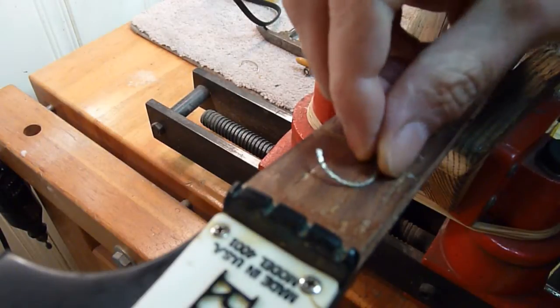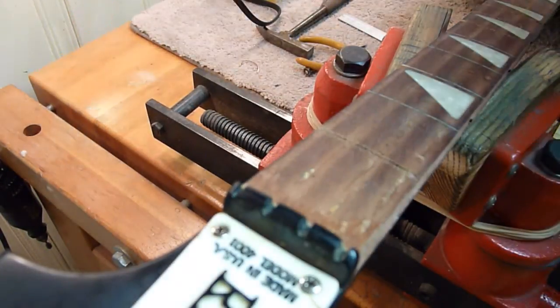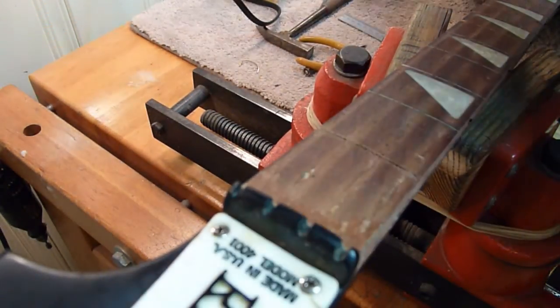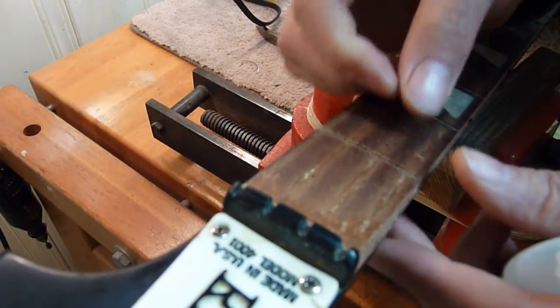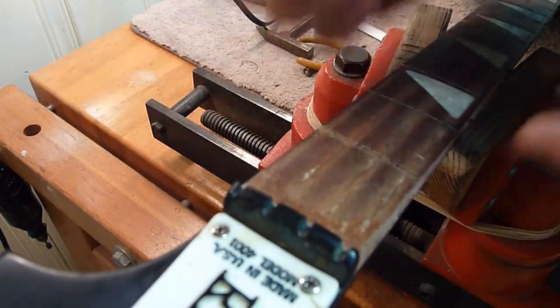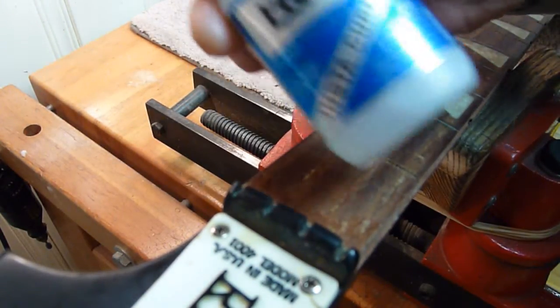There's the old tang. That fret didn't chip too badly. There are a couple of chips right there. I'm just going to pat them down, and then I'm going to use some water-thin CA glue.